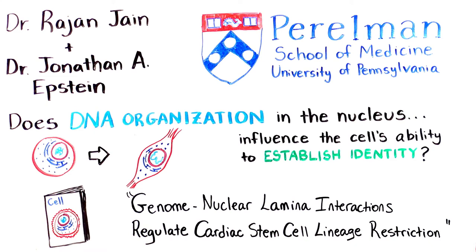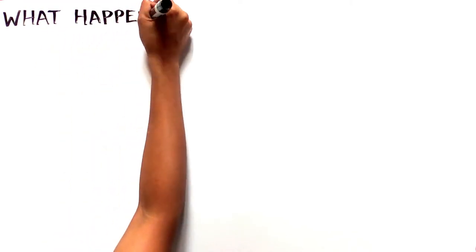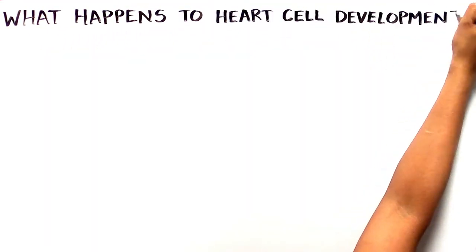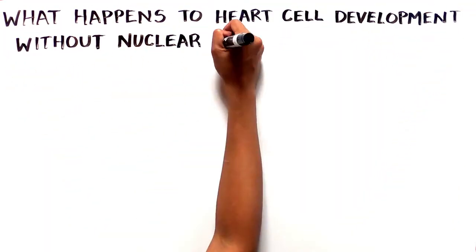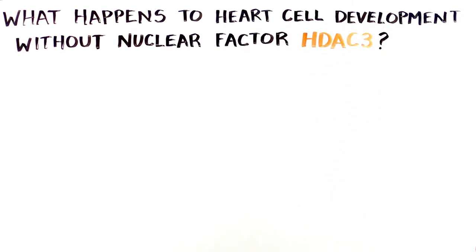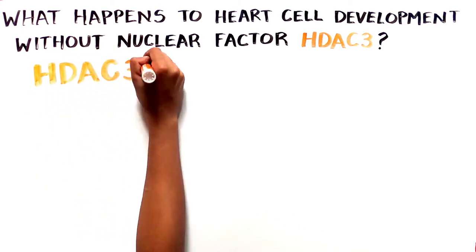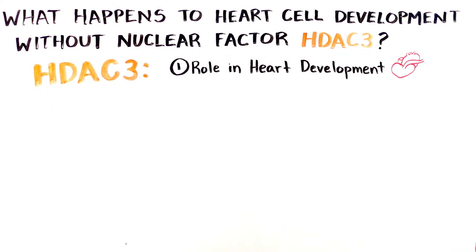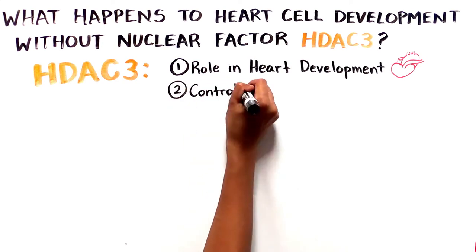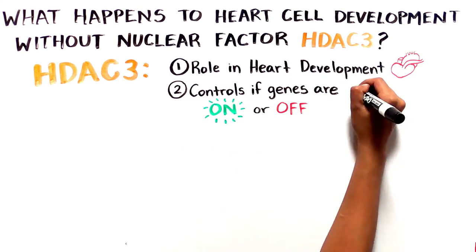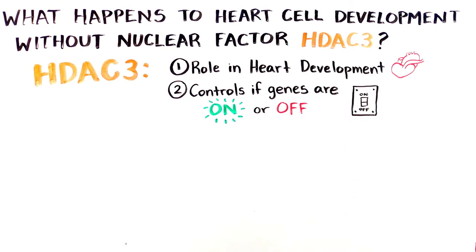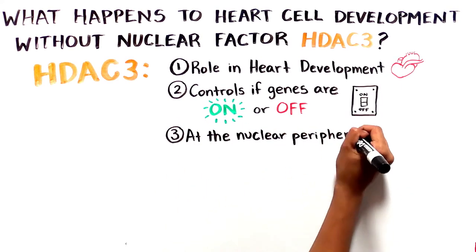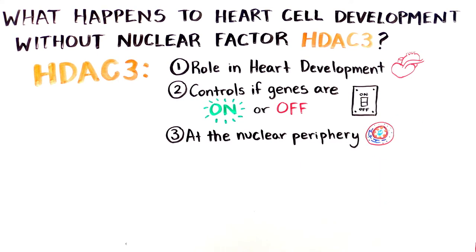The group started their study by asking what would happen to heart cell development if they removed a specific nuclear factor, HDAC3. They chose to study HDAC3 for several reasons: first, HDAC3 has a known role in heart development; second, HDAC3 is known to control whether genes are on or off; and finally, HDAC3 has been shown to be localized to the nuclear periphery.